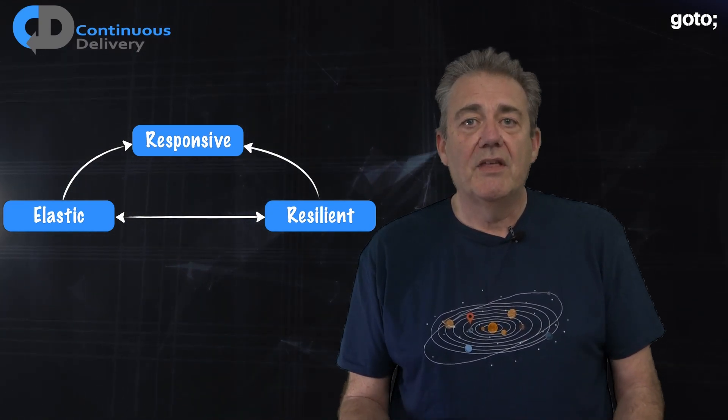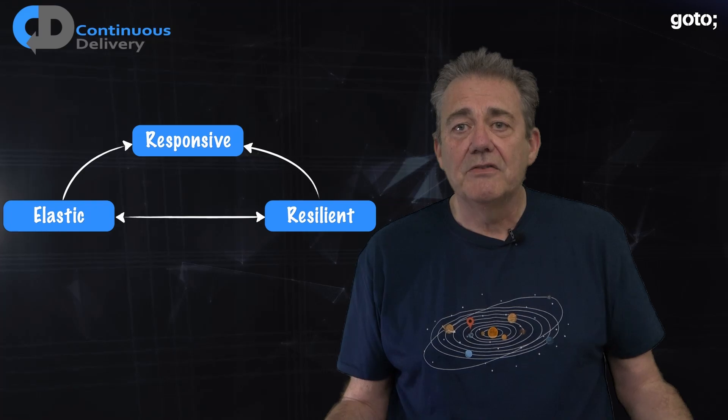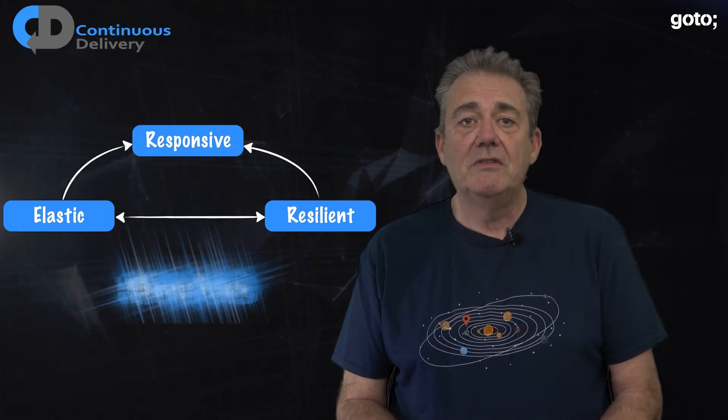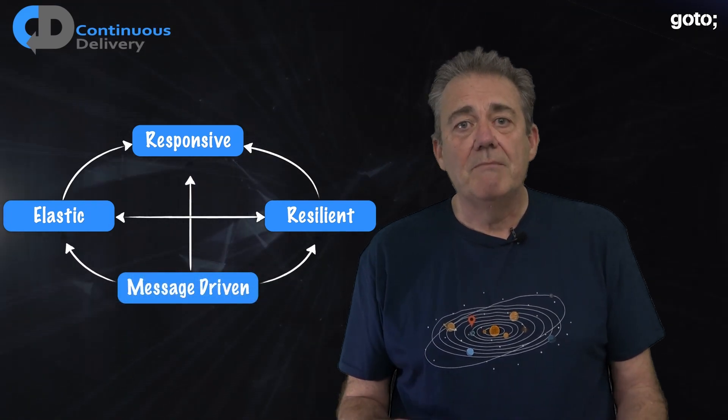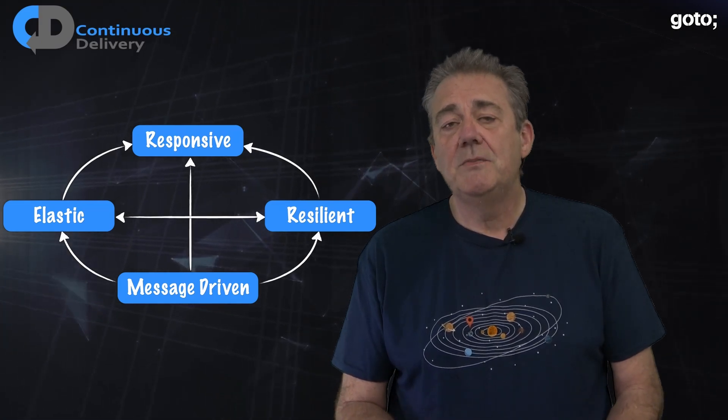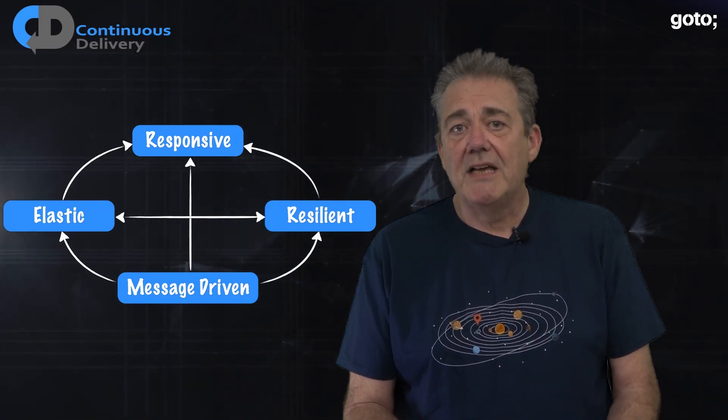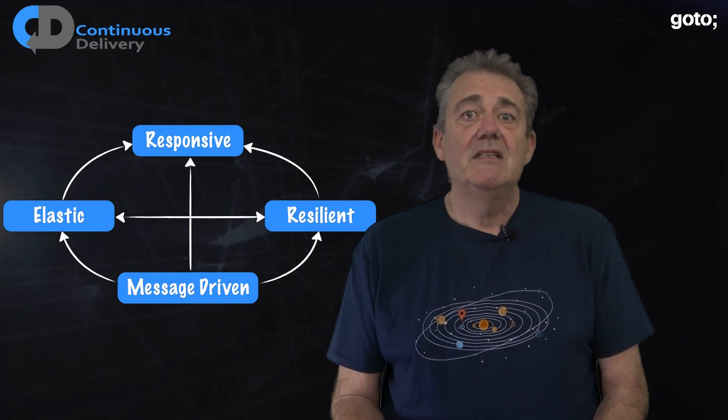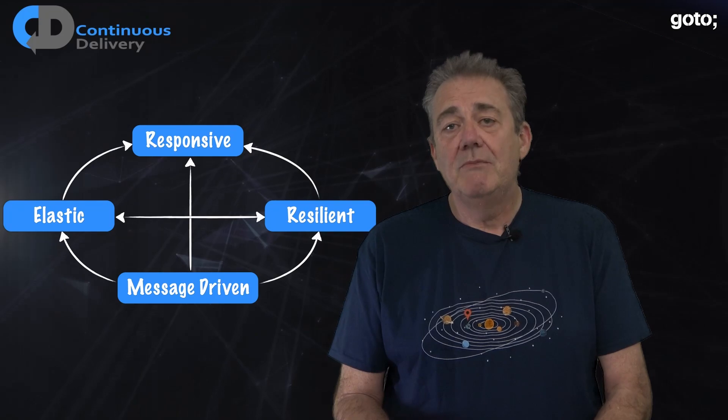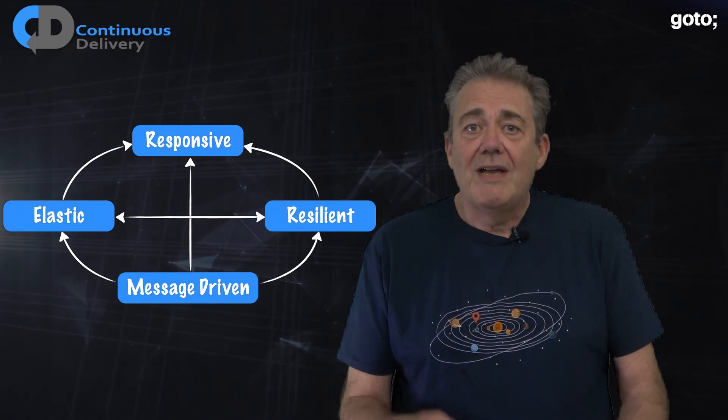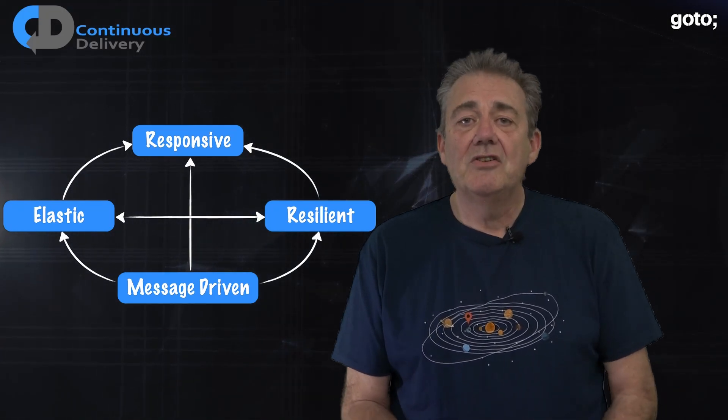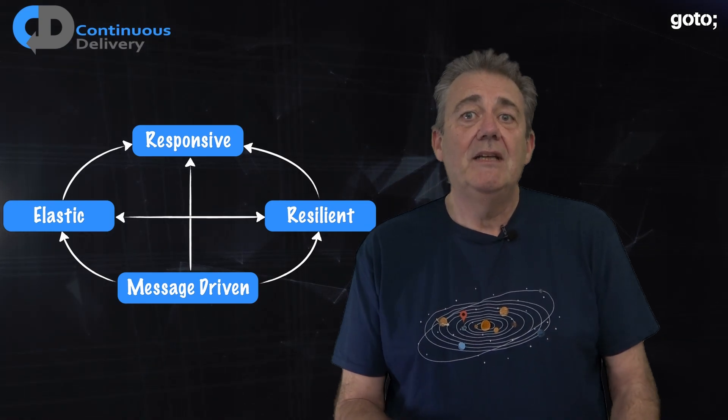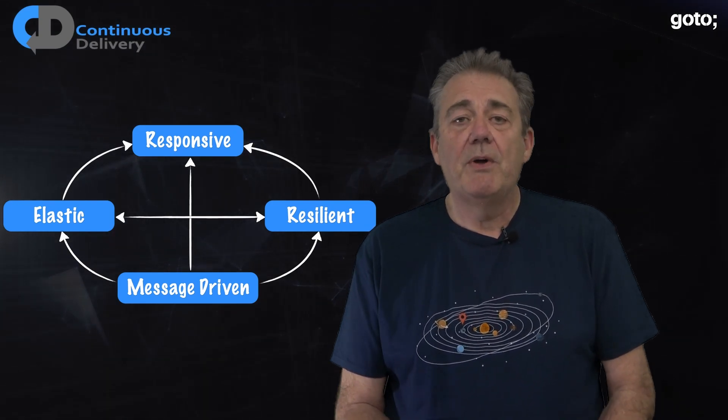The core idea though that underpins everything else is that they are message driven. Reactive Systems are based on asynchronous message passing. This forms a foundation for all of these other properties. It also means that Reactive Systems are naturally more loosely coupled, have greater isolation, location transparency and the ability to delegate errors to other parts of the system.